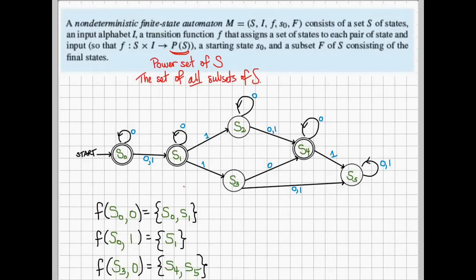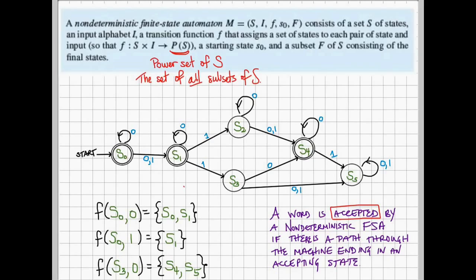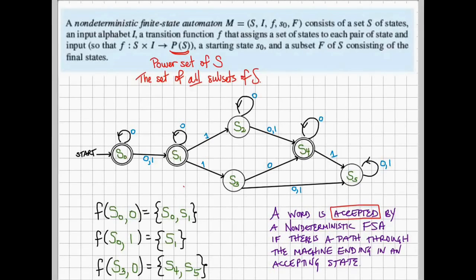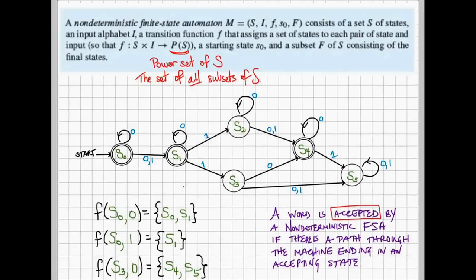What does this type of automata do for you? What kind of language does it recognize? In this case, we're going to say that a word is recognized or accepted by this non-deterministic finite state automata if there is some path through the machine that ends in an accepting state. It doesn't mean all paths have to end in an accepting state, just some paths.